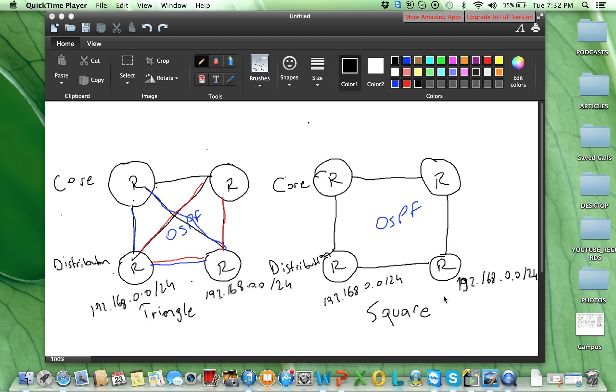On the right side, also same network I am advertising from these two distribution routers and I am running OSPF. We have two triangles here, the blue one and red one. And let's see what happens.